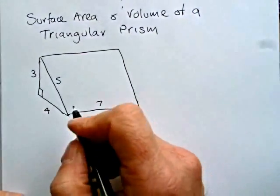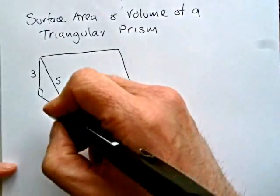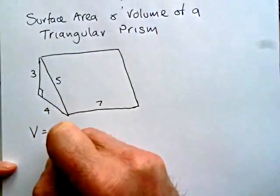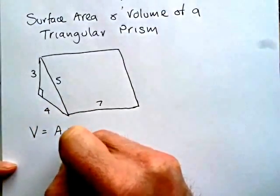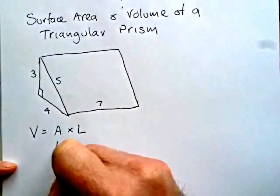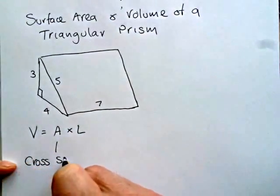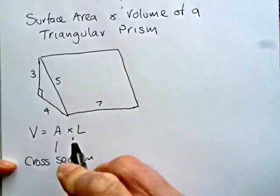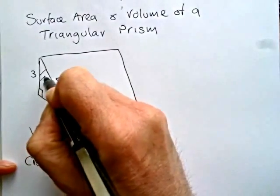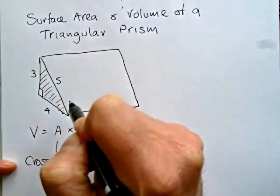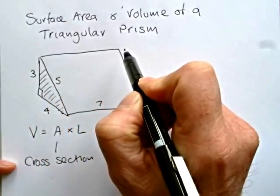So if we are going to do the volume, then the volume of a solid is the area of the cross section times the length of consistency. I'll put in here cross section as well. So the cross section of the triangular prism is the triangle itself, and that triangle is consistent through this length here.